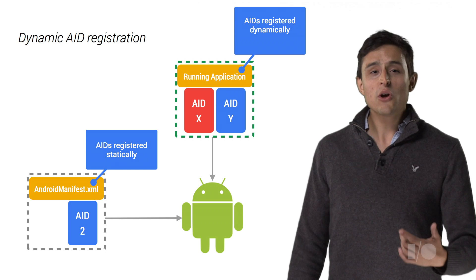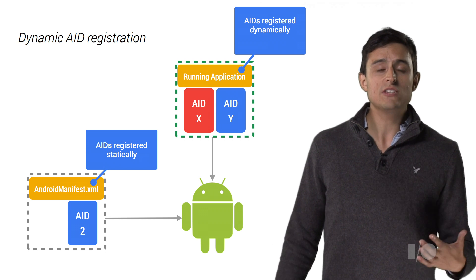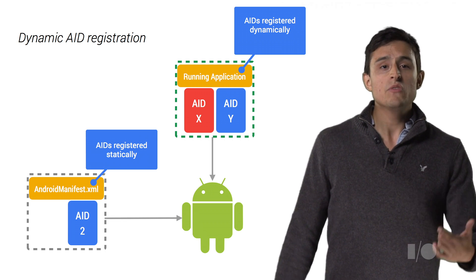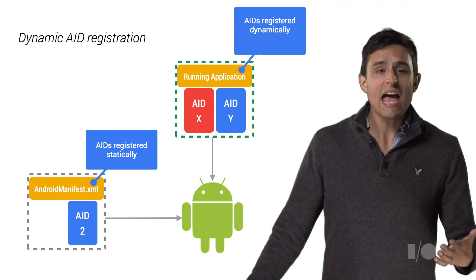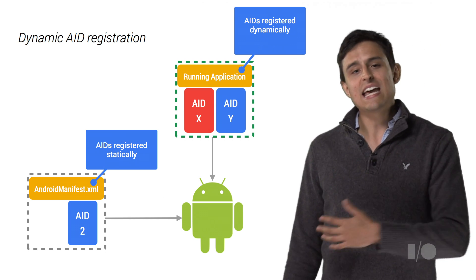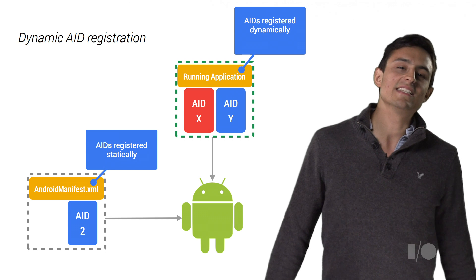For example, if your loyalty card app receives a new type of loyalty card with a different AID, you can register it without recompiling the app. Use these APIs to dynamically register your application's AIDs.